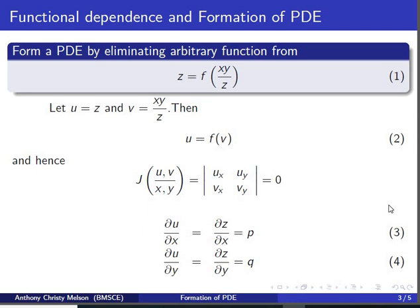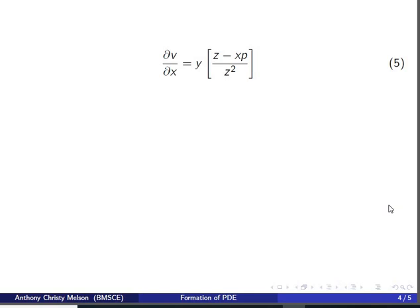∂u/∂y will be ∂z/∂y which we represent as q. Now when we differentiate v with respect to x or y, we need to apply the quotient rule. Therefore, ∂v/∂x is (y·z - xp)/z². Similarly, ∂v/∂y is (x·z - yq)/z².